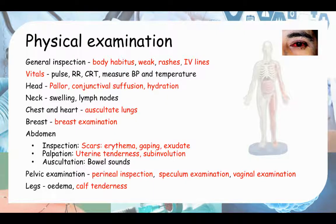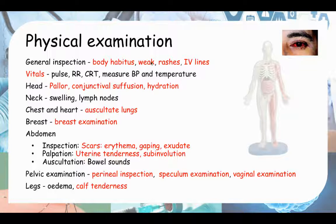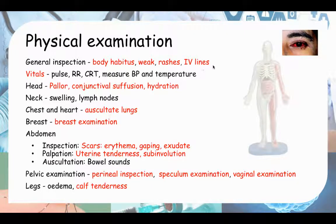Once that's done, go to physical examination — let's look at this systematically. First, general inspection: look from afar and inspect the patient and their surroundings. Look at their body habitus — are they obese? Remember obesity is a risk factor. Do they look weak? You have to think of sepsis. Any rashes — a generalized macular rash is one of the signs of toxic shock syndrome. Look at any IV lines for erythema or cellulitis, which might be the source of infection. Then go to the wrist, feel for the pulse, check all vitals.